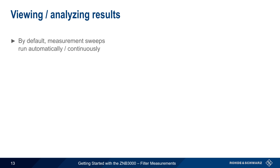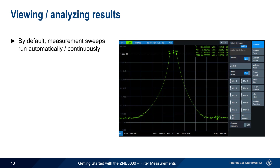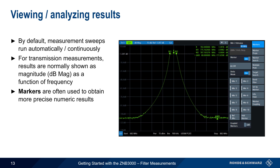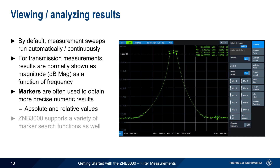By default, measurement sweeps are run automatically and continuously, and for filter transmission measurements, results are most often shown as a trace of magnitude in dB as a function of frequency. In many cases, markers are placed on the trace to obtain more precise numerical results, either as absolute values or as values relative to a user-defined reference. The ZMB3000 also supports a variety of marker search functions, such as finding the maximum trace value or the 3 dB points, as well as special filter-specific measurement functions.